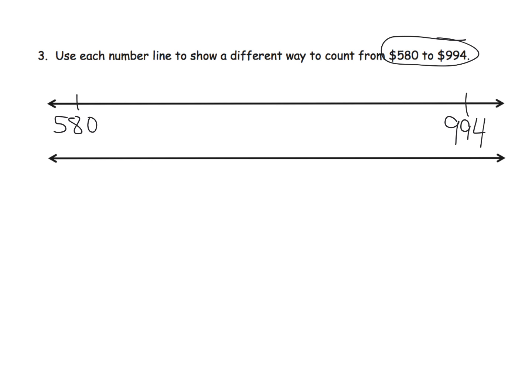And we're going to make a series of hops from 580 to 994. Now the cool thing about the empty number line is this is not proportional, so your hops do not have to represent—they don't have to be in proportion to one another.